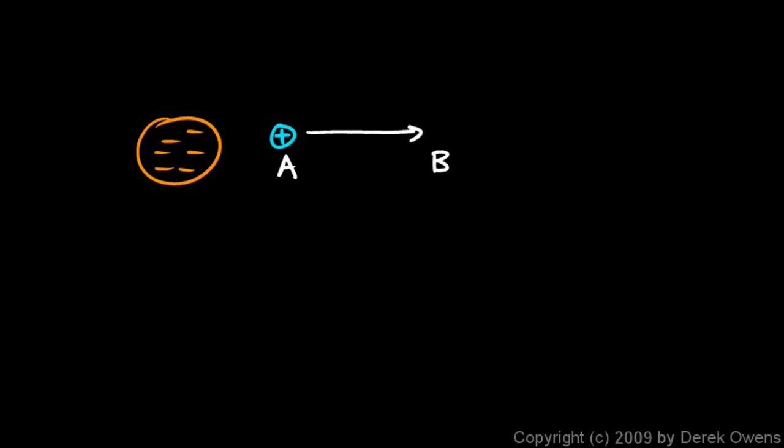Now we're ready to talk about voltage. Let's think back about our earlier example: we had a large negatively charged object fixed in space, and there were two points, point A and point B. We imagined a charge at point A that is naturally pulled to the left, so if we want to move it to point B we have to exert a force through a distance — we're doing work, expending energy — and that energy goes into electrical potential energy stored at point B.